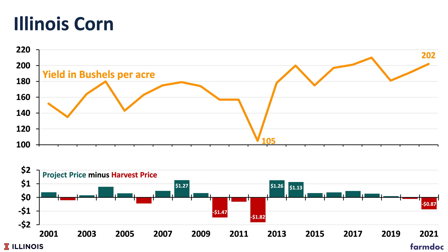In the drought year, if we look at Illinois yields, they were well below what we would expect, and there were many crop insurance payments made in those years. Those payments, if you had RP, were made at the much higher harvest price of $7.50, versus the projected price of $5.68 used in RPHPE.